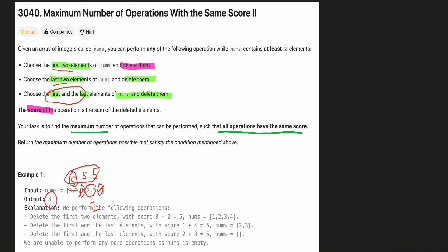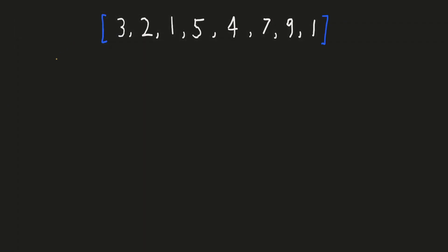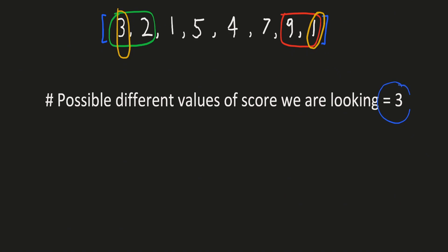Let's find some important properties of the score we are looking for. In our very first operation, we can choose the first and second element, or the last two elements, or the first and last element to get the score. So you can notice that there are at most 3 different possible values for the score we are looking for from all pairs in the array. These 3 are the possible starting score values.